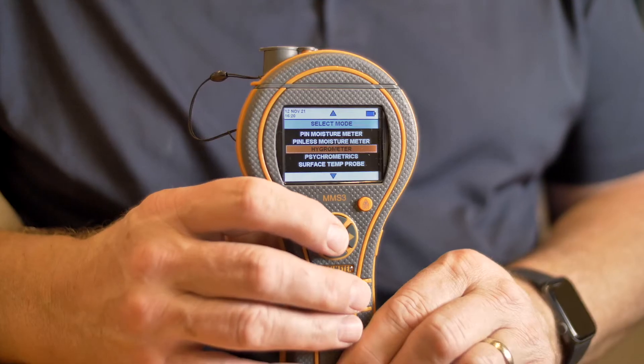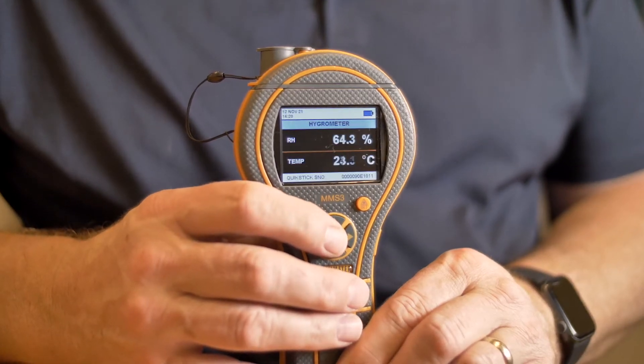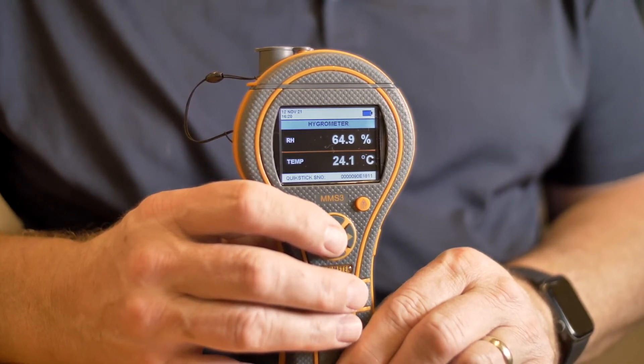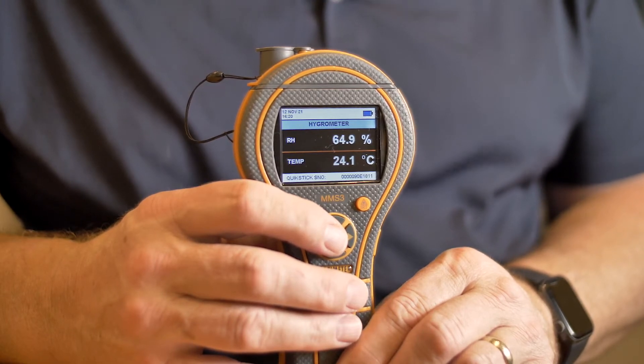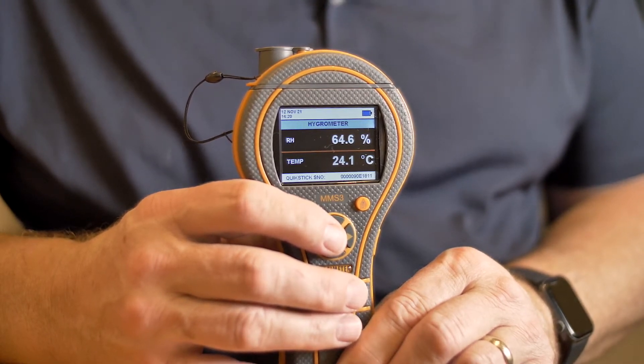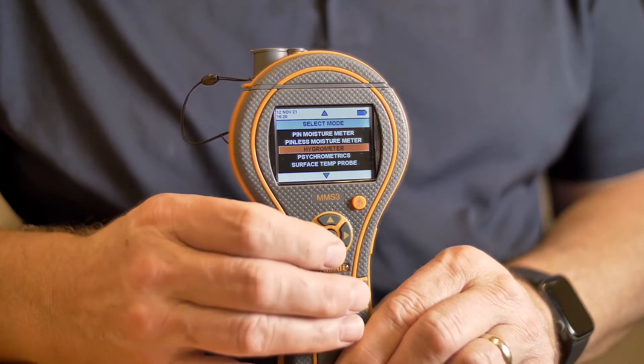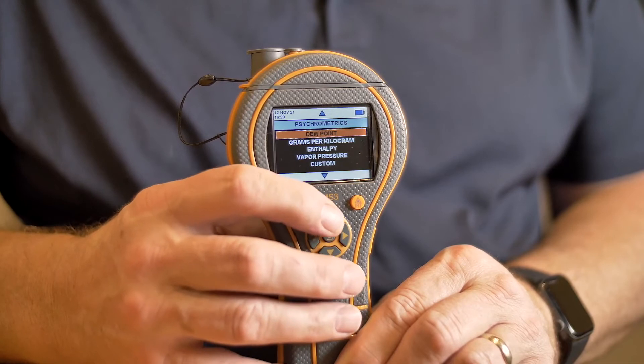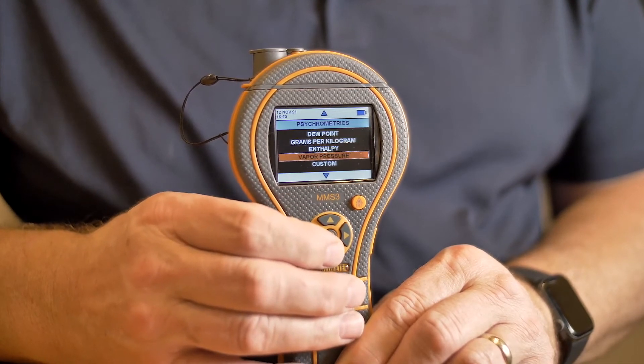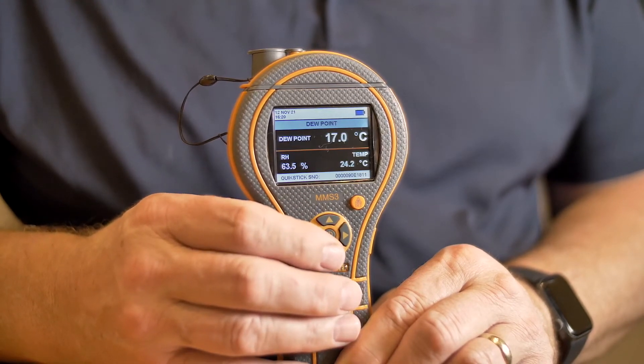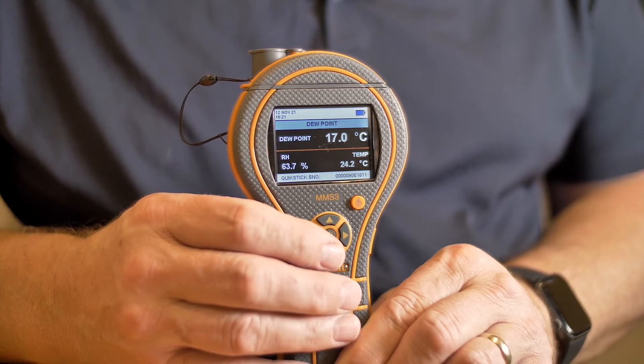Let's take a more detailed look at the hygrometer function. We'll select hygrometer, and here you'll see the relative humidity on the top part of the display and temperature on the lower part. This can be shown in degrees C and degrees F. Now we'll go to our psychometric functions. You can select one of many different psychometric calculations. Let's look at dew point. Here we'll see the dew point on the top, and the relative humidity and temperature on the lower display.